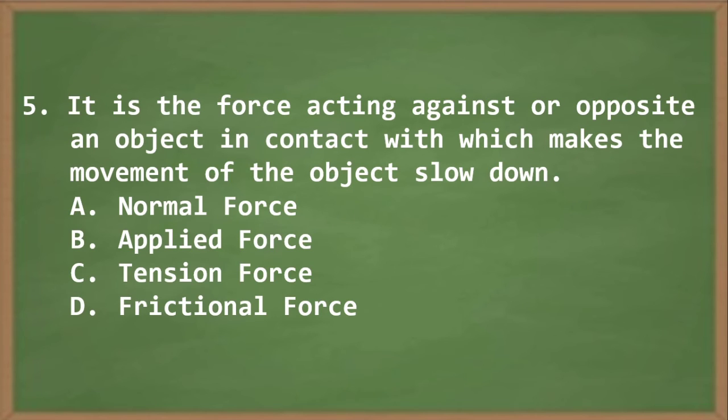Question number five: It is the force acting against or opposite an object in contact with which makes the movement of the object slow down. A, Normal force. B, Applied force. C, Tension force. And Letter D, Frictional force.